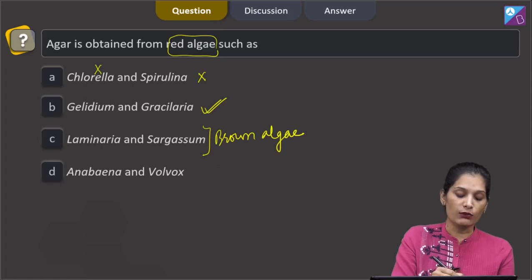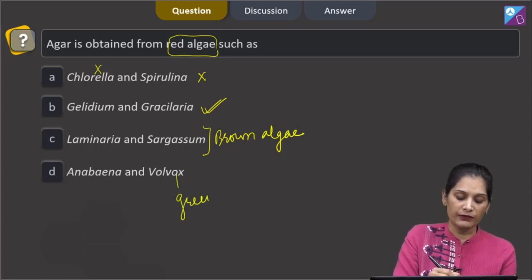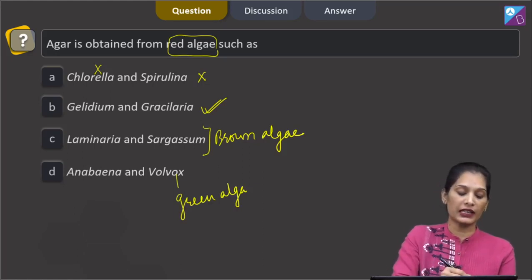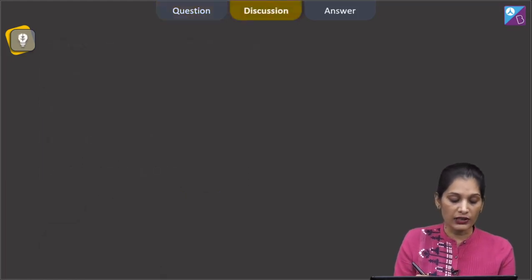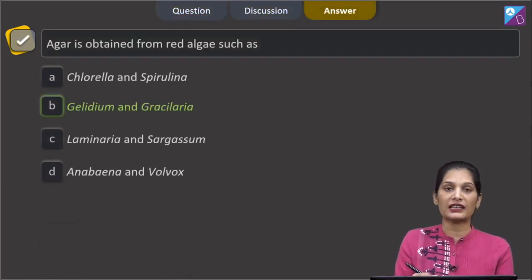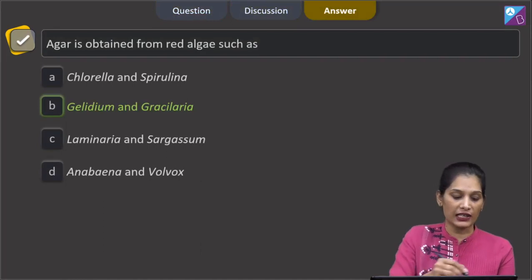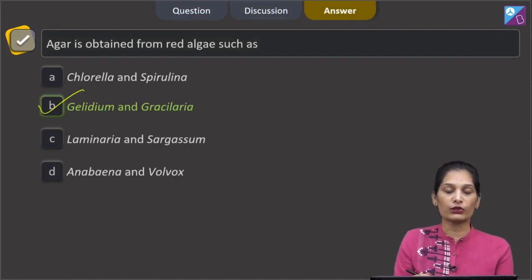Anabina and volvox. Volvox is green alga whereas anabina is blue green alga. So agar cannot be obtained from here too. The correct option for the given question is option B, that is geladium and gracilidia.